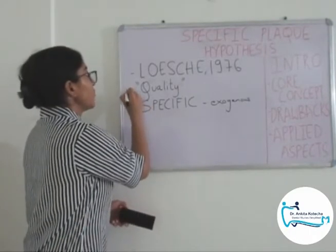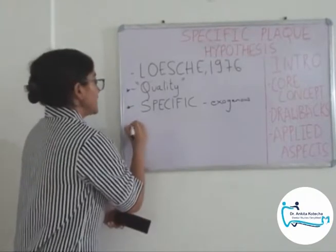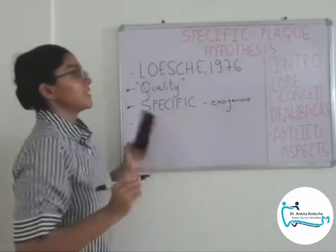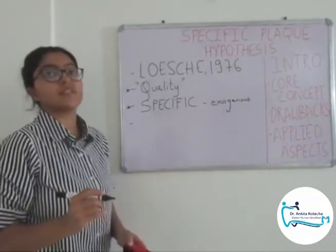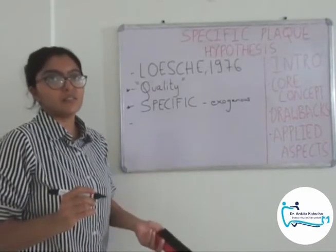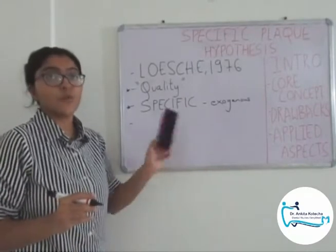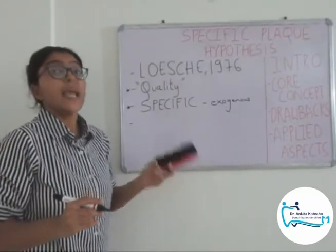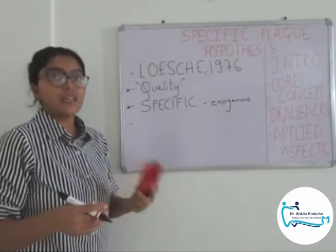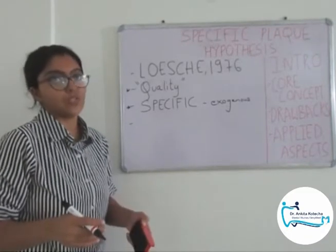The two differentiating points are quality versus quantity, and specific versus all. Coming to applied aspects: if we accept that specific microorganisms, which are exogenous in nature — meaning they have entered the oral cavity from an external source — are responsible for periodontal disease, then antibiotics which target such specific microorganisms should kill them and result in total elimination, thereby improving the treatment outcomes.